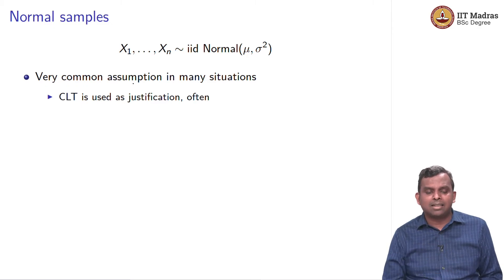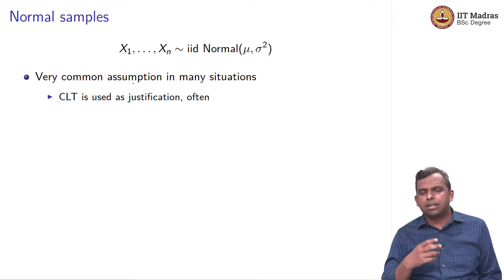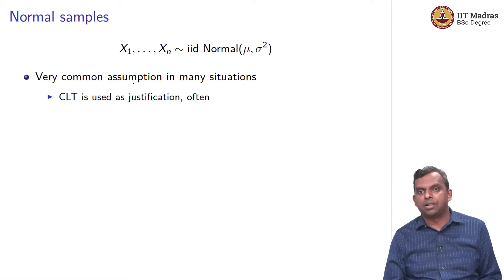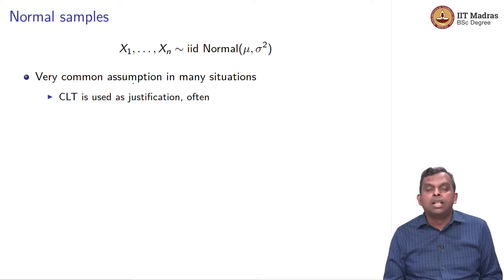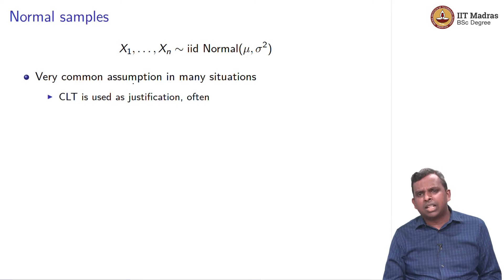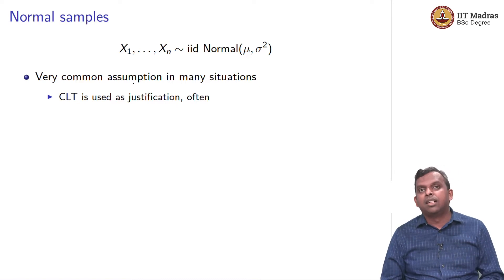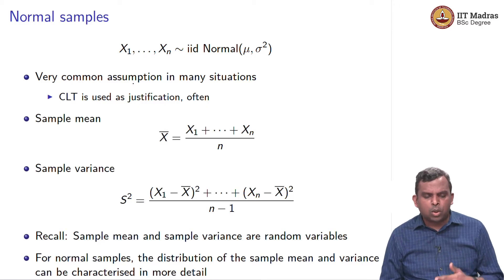The assumption of a normal distribution is quite standard in many situations and is a good approximation in many situations. The Central Limit Theorem (CLT) is often called for and used in this context, and even otherwise the normal distribution is a very good assumption to make when you do not know much about what is going on.